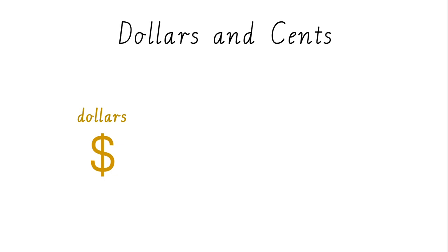When we use dollars and cents, we use a dollar sign to mark the dollars. We use the cents sign to show cents. This is the decimal point. We use this to separate the dollars from the cents.